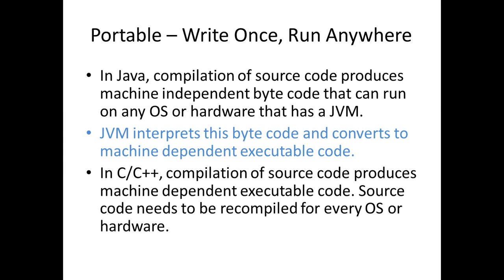Comparing this to C or C++: when you compile source code in C or C++, you produce machine-dependent executable code that runs only on the platform for which it was compiled. If you compile C/C++ code on Linux, it only runs on Linux — you have to recompile it on Windows to make it run on Windows. You have to recompile for every operating system or hardware platform.